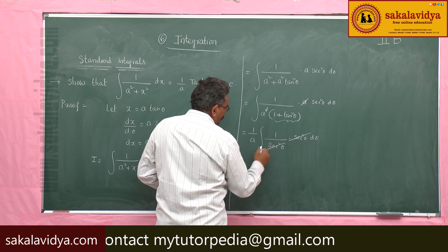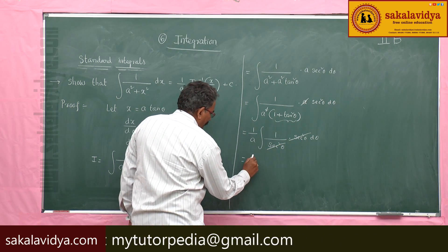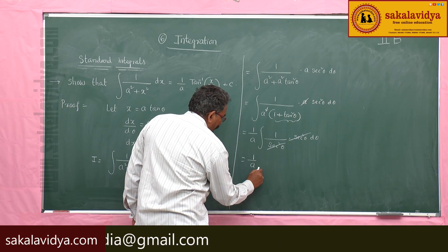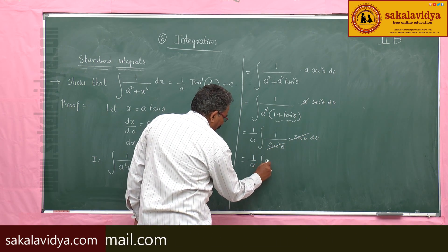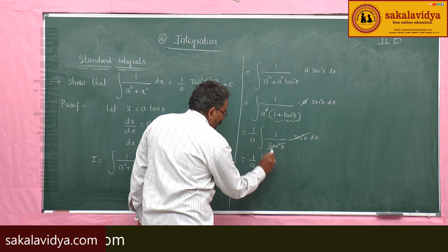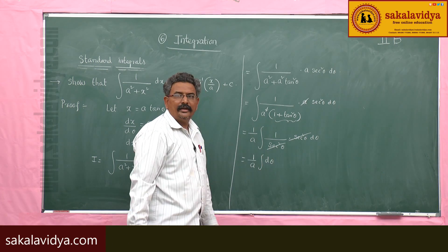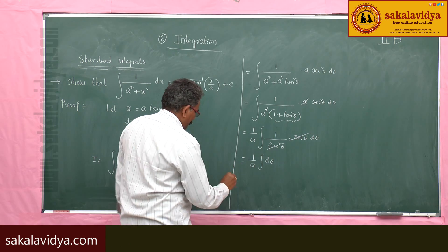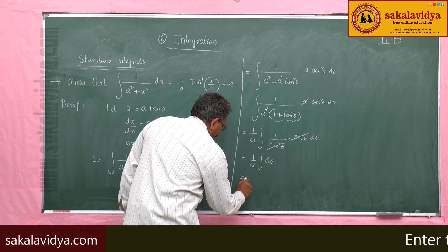Since 1 + tan²θ = sec²θ, we get (1/a)∫ (1/sec²θ) · sec²θ dθ. The sec²θ terms cancel, leaving (1/a)∫ dθ. The integral of dθ is θ, so the result is (1/a)θ.